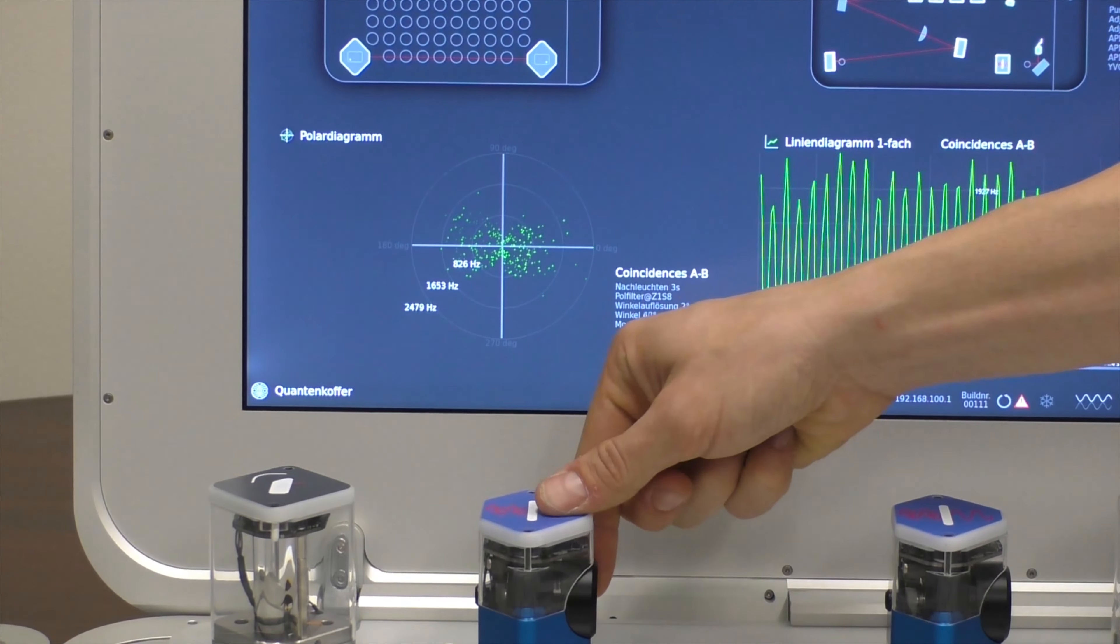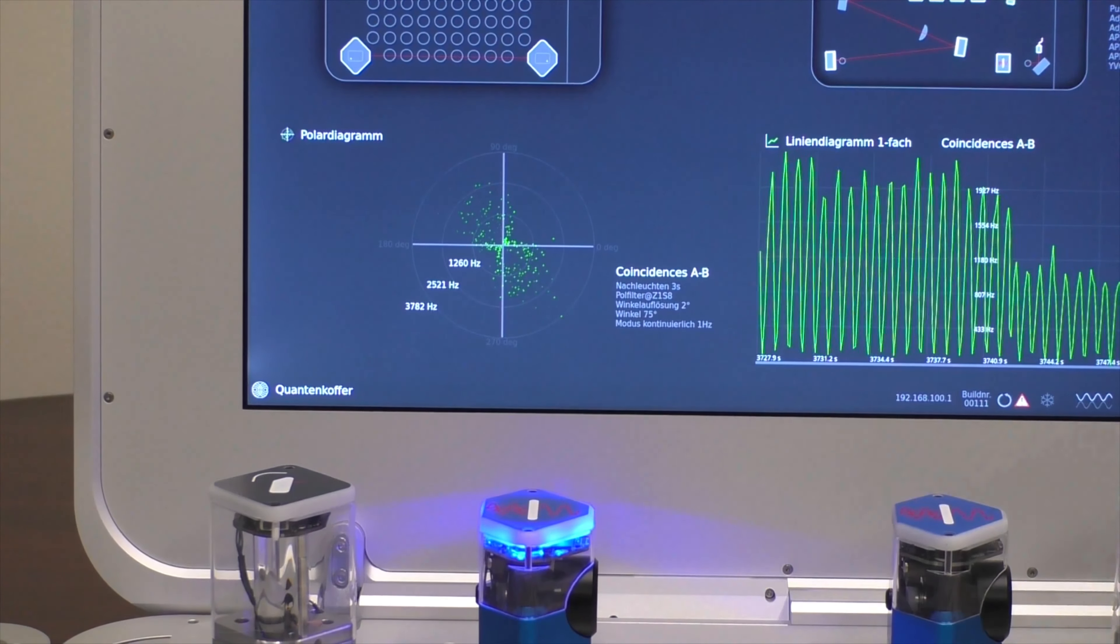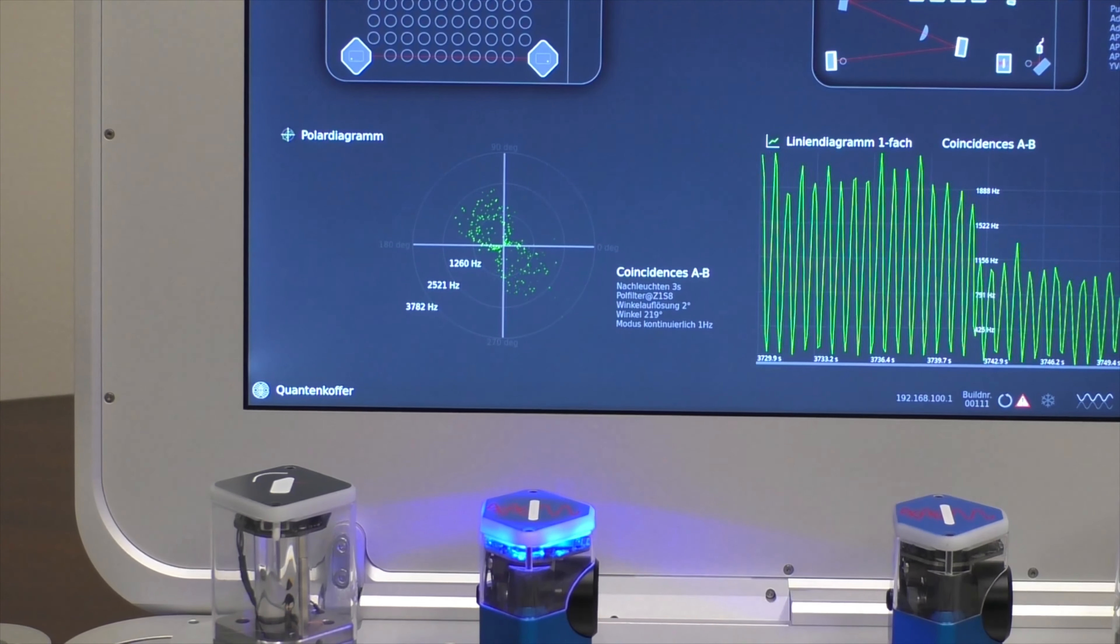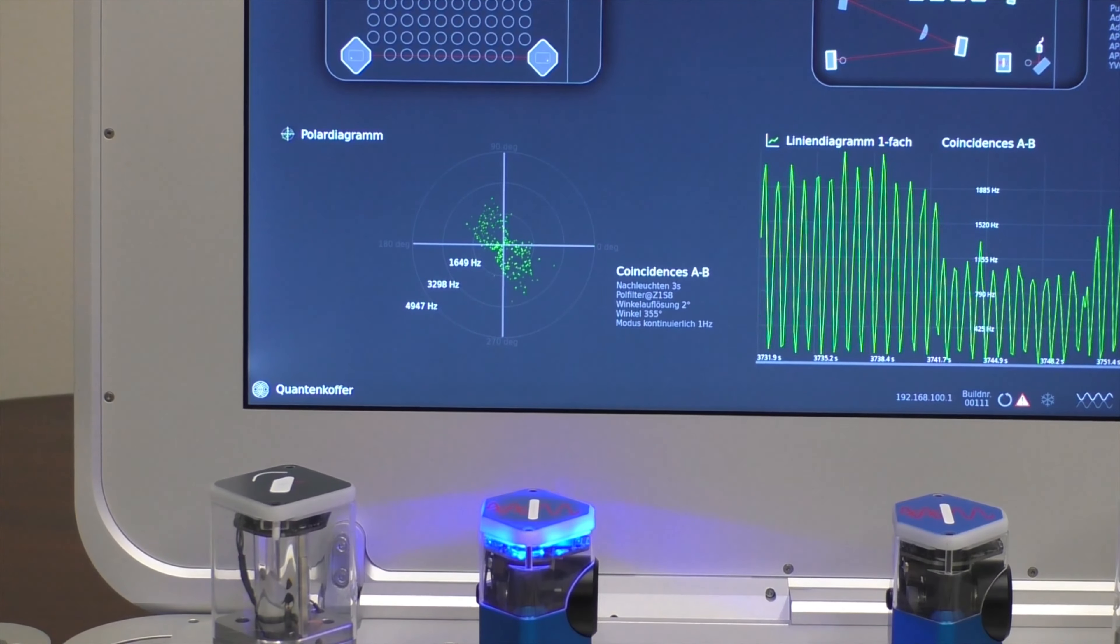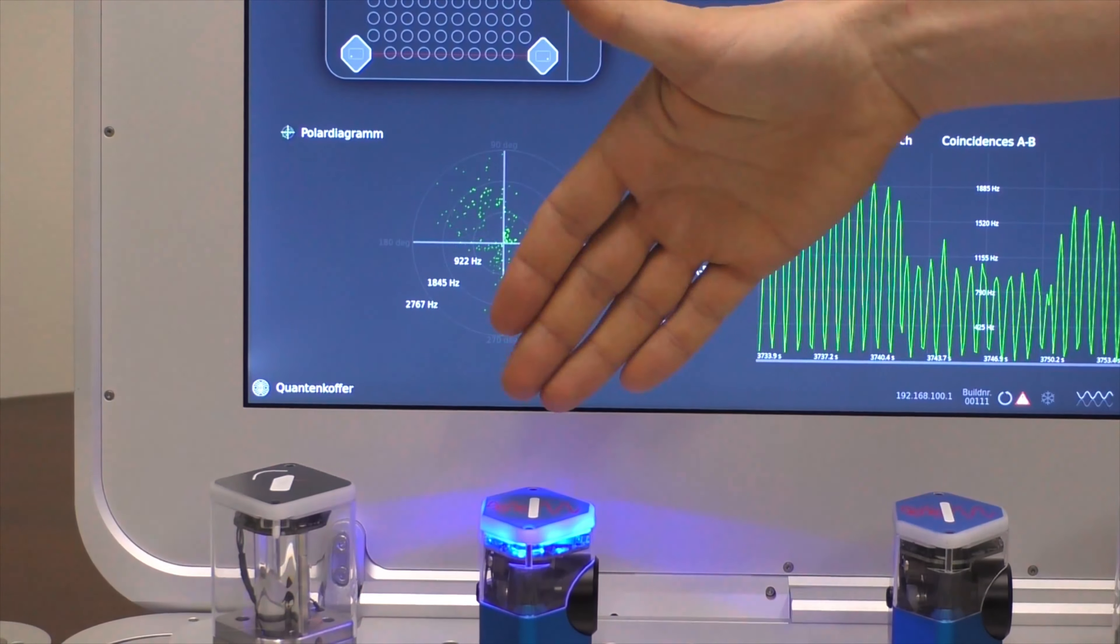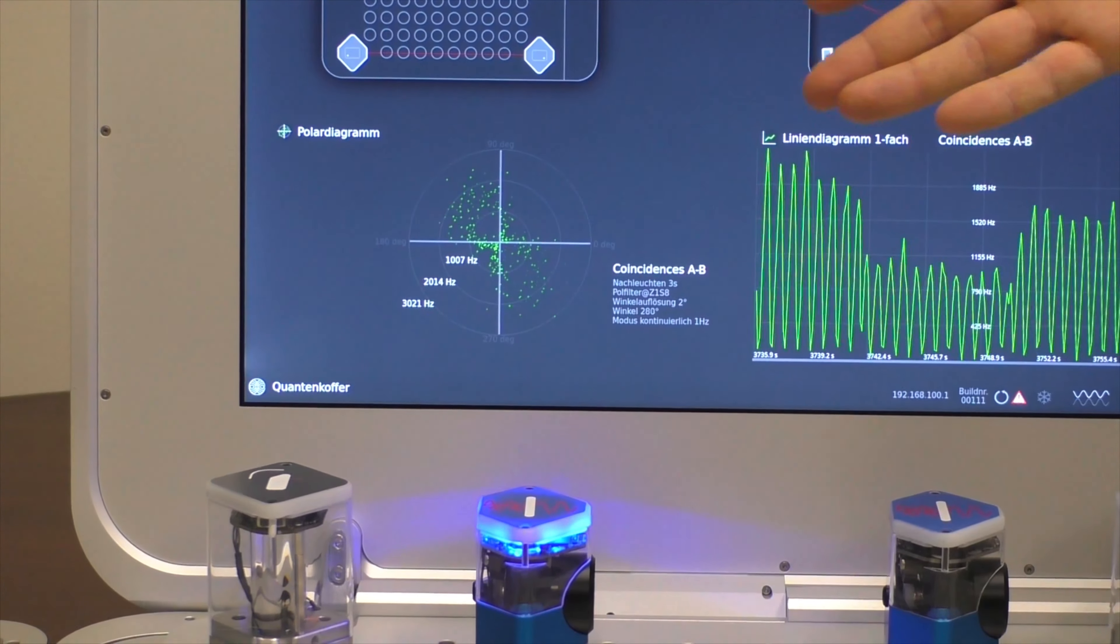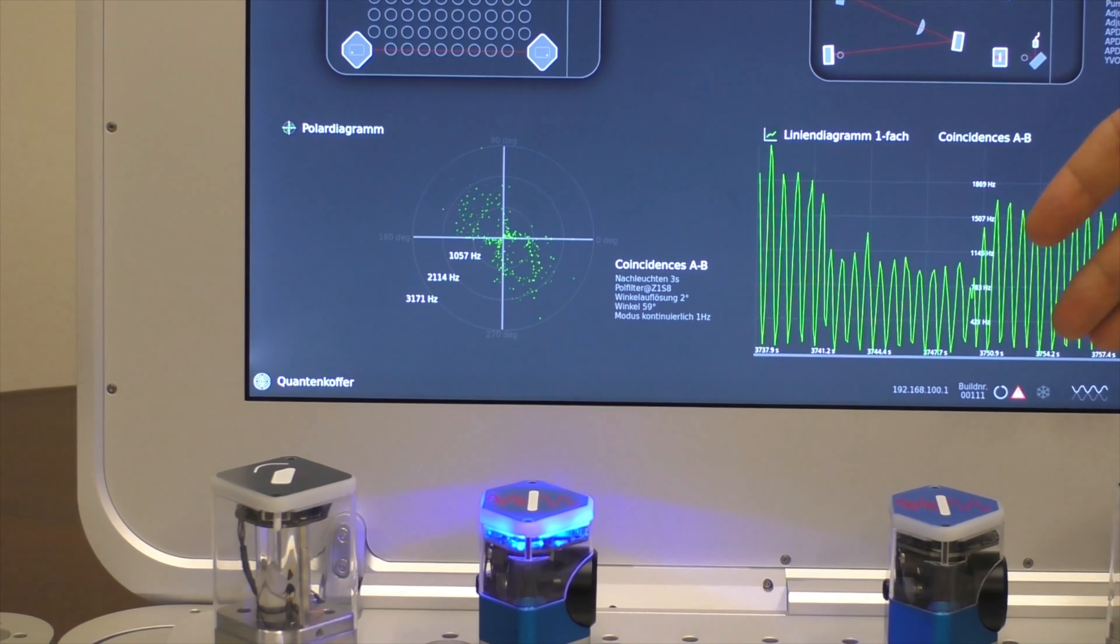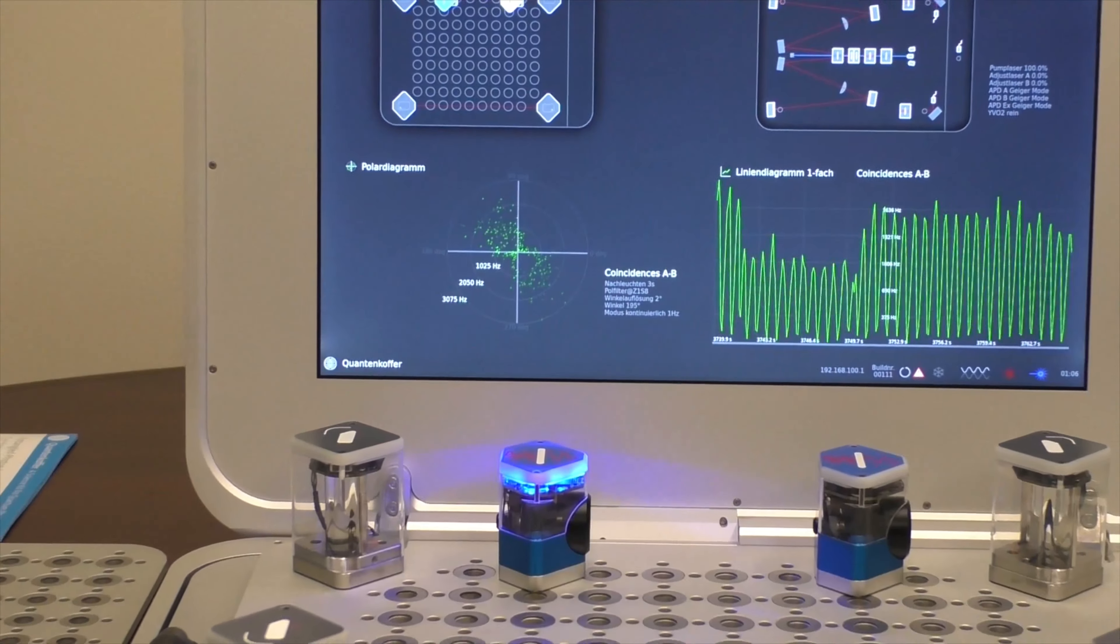I can also turn this to 45 degrees and we'll get the figure of 8 at 45 degrees. So this is nothing to wonder about. That's just this polarizer leaves photons through with a specific polarization and this polarizer measures the polarization which is set by the first polarizer.